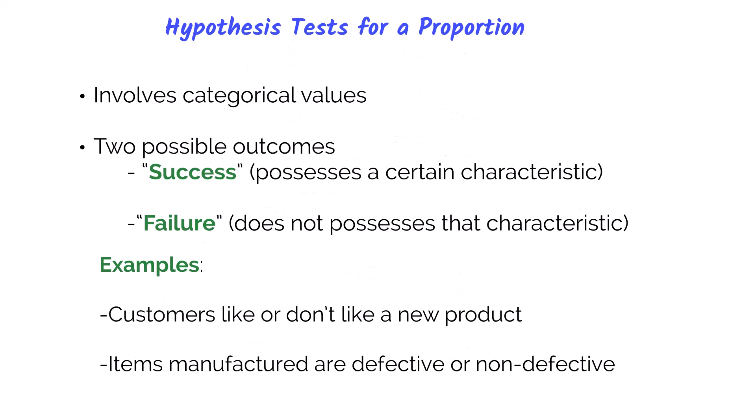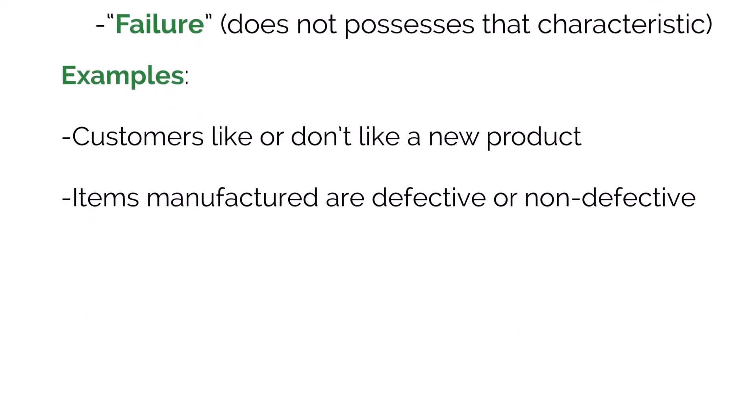So when do we use a hypothesis test for proportion? Proportions involve categorical values — categories or words where we have two possible outcomes: a success, which means the item has the characteristic of interest, or a failure, meaning it does not. For instance, we could test the proportion of Airbnb listings that are apartments. Other examples include customers that like or don't like a product, or items that are defective or non-defective. This is a binomial process because there are two possible outcomes.